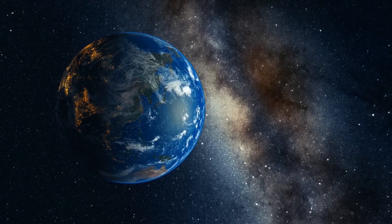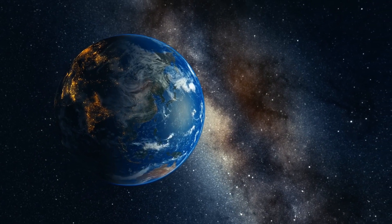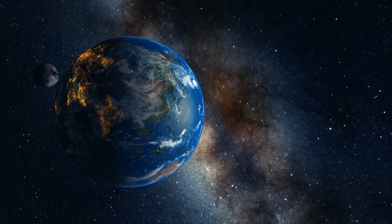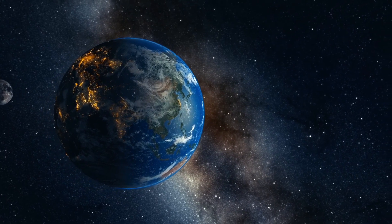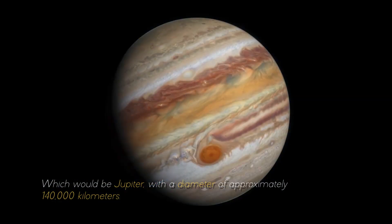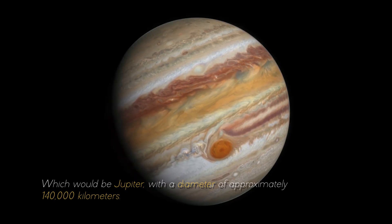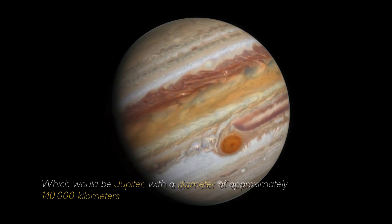If we compare it with the largest planet in our solar system, it would look like a ping-pong ball in front of a soccer ball, which would be Jupiter, with a diameter of approximately 400,000 kilometers.